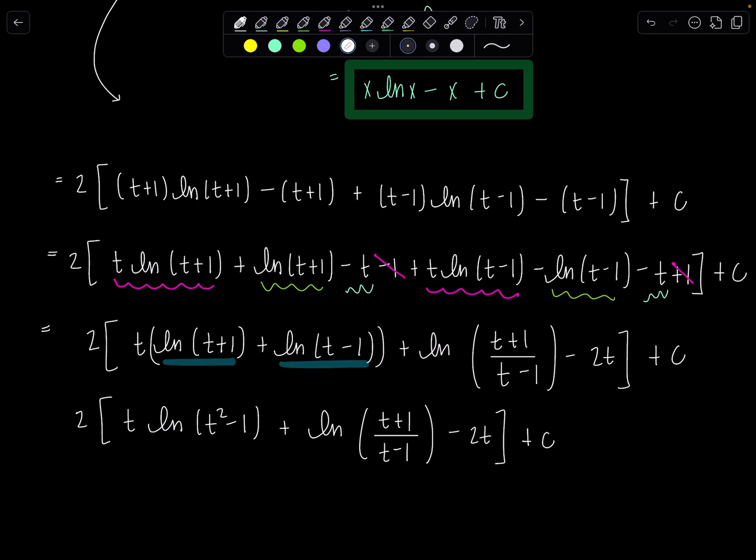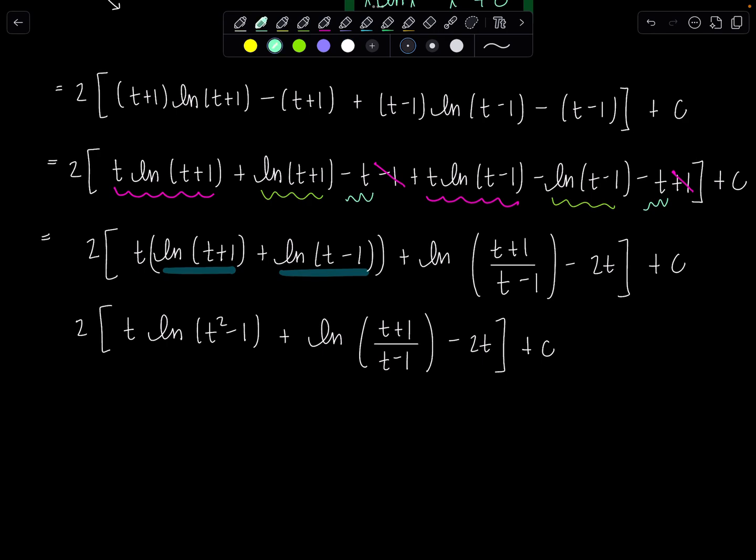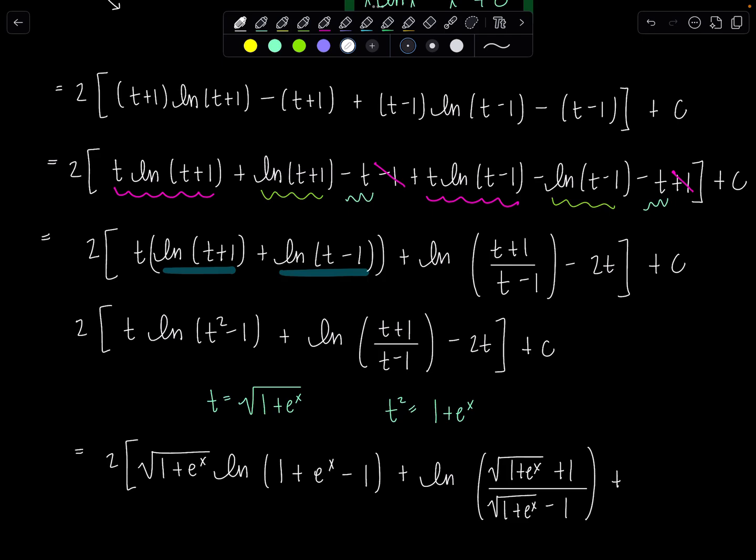And then now we need to go back to the original variable. So recall our substitution was that t was the square root of 1 plus e to the x. And then that means t squared is just 1 plus e to the x. So here we go. This is going to be 2 times square root 1 plus e to the x. Natural log of t squared is 1 plus e to the x and then we have minus 1 plus natural log square root 1 plus e to the x plus 1 over square root 1 plus e to the x minus 1 minus 2 square root 1 plus e to the x plus c.